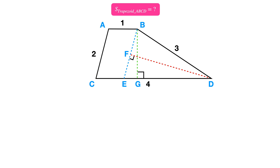First, draw a parallel line to AC passing through point B and intersecting CD at point E. Then, draw a perpendicular line from point D to line BE, meeting at point F. Another perpendicular line is drawn from point B to line ED, intersecting at point G.